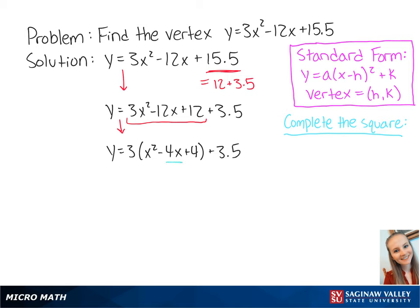we want the coefficient of x and multiply it by 1 half. So we get 1 half times negative 4 equals negative 2. Then we take the negative 2 and we square it, which gives us 4.